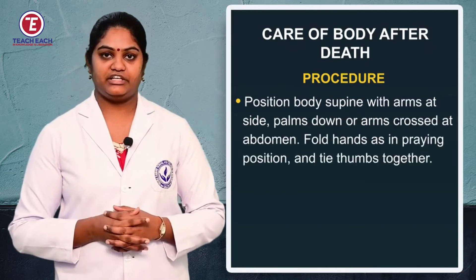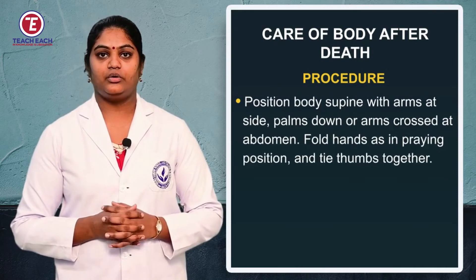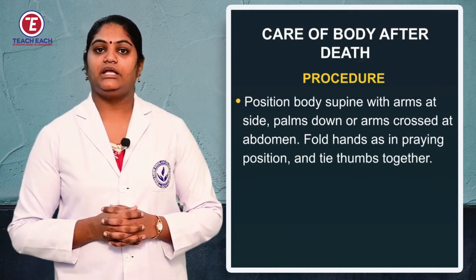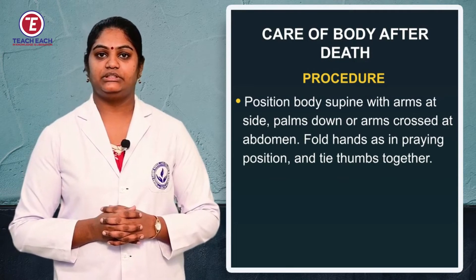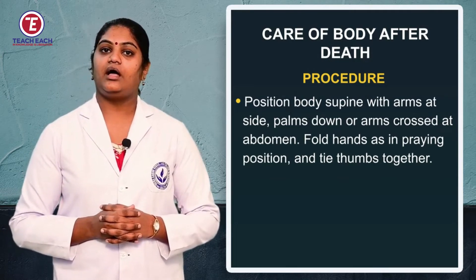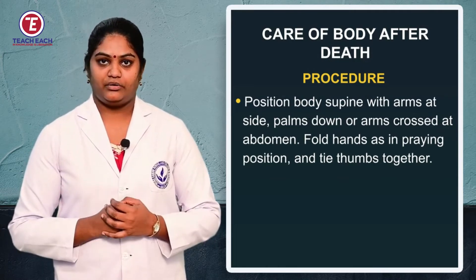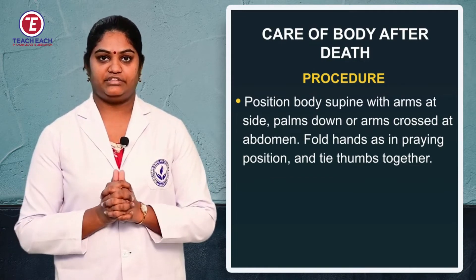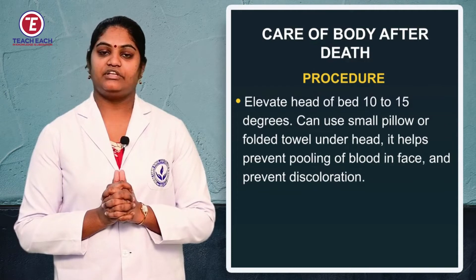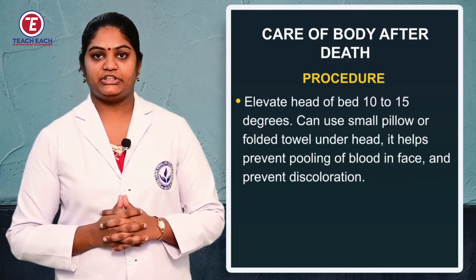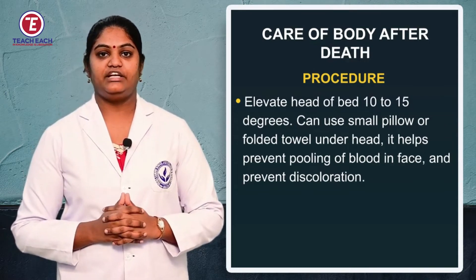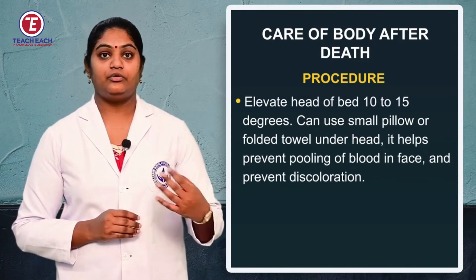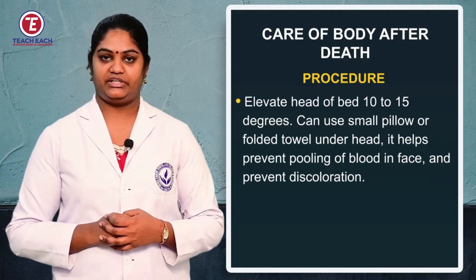After wearing personal protective equipment, provide the correct position to the dead body. Maintain the supine position, cross the arms over the abdomen, fold the fingers together, and tie the thumb fingers. Elevate the patient's head 10 to 15 degrees to prevent pooling of blood and discoloration of the face.